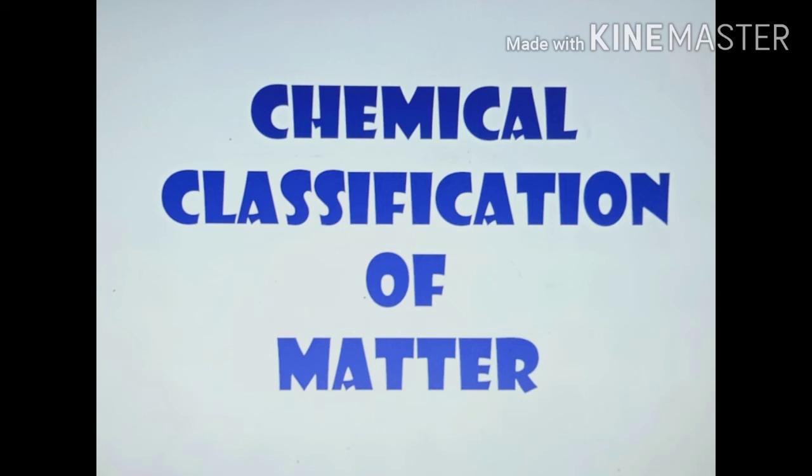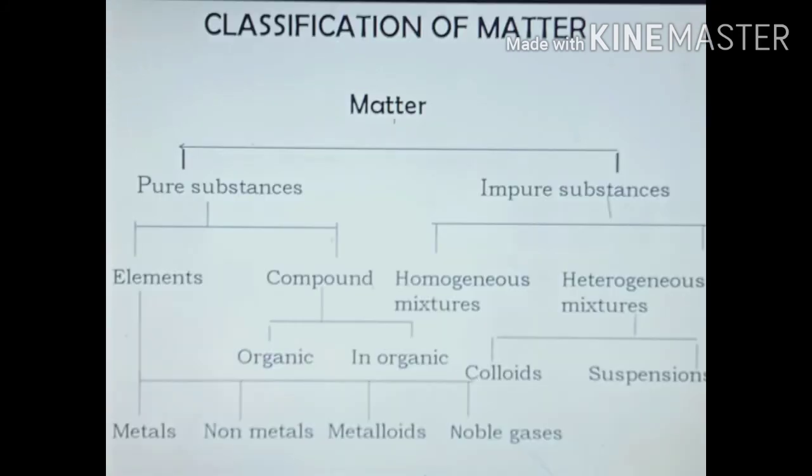In previous lessons you studied the scientific definition of matter and how matter may be classified into three states. But matter can also be classified chemically — either into pure substances or impure substances, also termed as mixtures. Pure substances are classified into elements and compounds. Elements are of four types: metals, non-metals, metalloids, and noble gases.